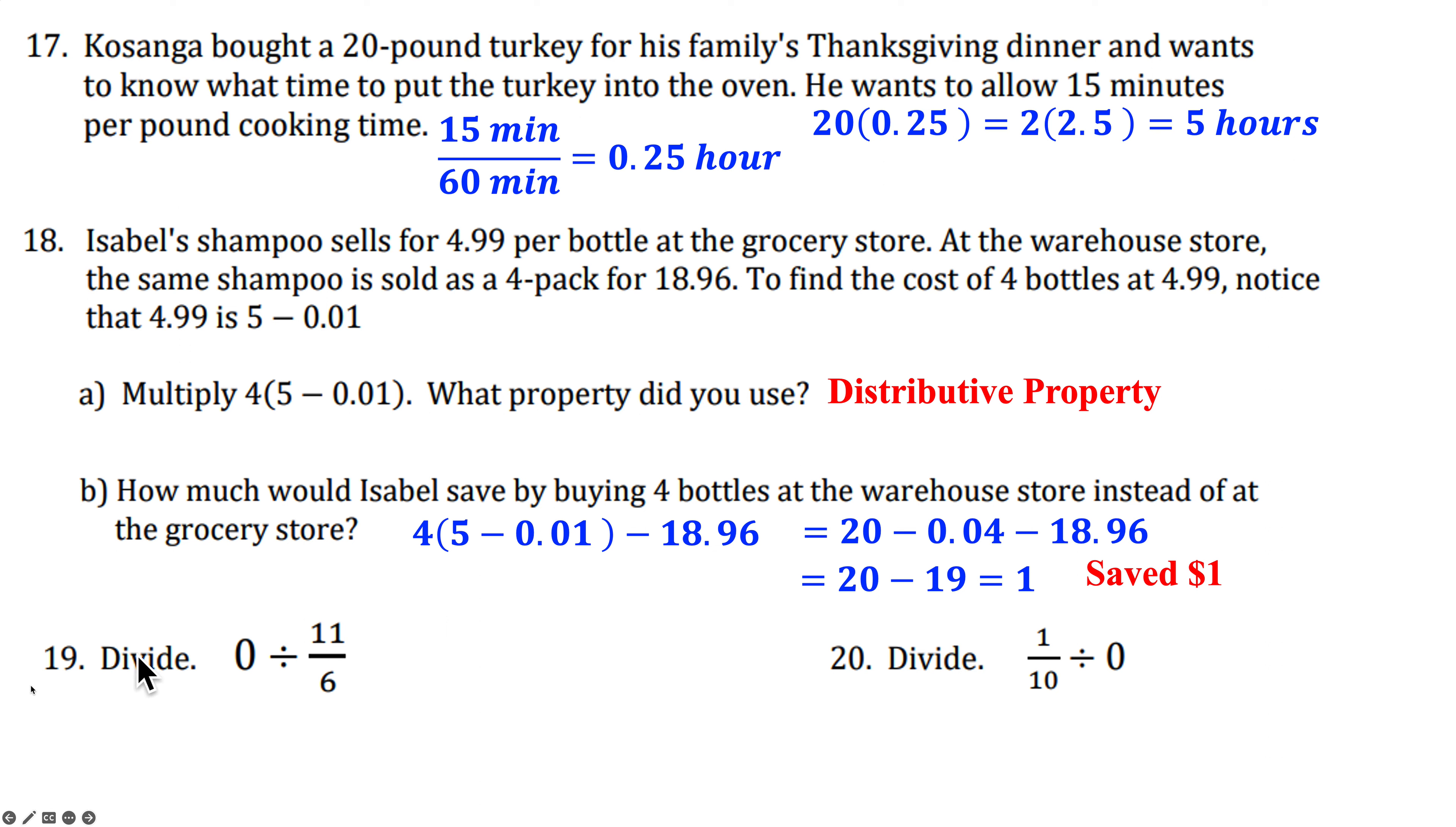All right 19, 0 divided by 11 over 6. Well we don't divide by fractions. We multiply by its reciprocal. So times 6 over 11, 0 is automatically 0. Now 20 over here is a different story. Now we're dividing by 0. It doesn't matter what this fraction is. You can't divide by 0 because again that's like saying times 1 over 0. That's undefined. You can't divide by 0. And that wraps up our 1.5.